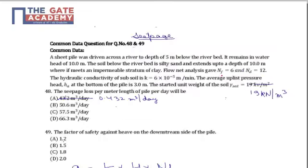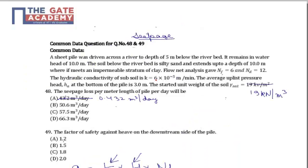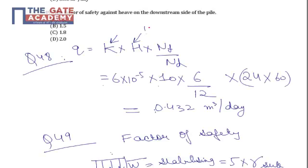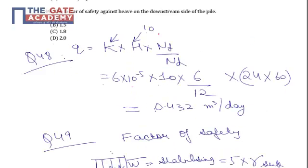Now we know that seepage loss from flownet diagram is given by coefficient of permeability into height of strata, or not height of strata, in fact head through which is causing the flow, which in this case is given that it remains in water height of 10 meter. So H in this case will be 10 into number of flow lines upon number of potential drops.